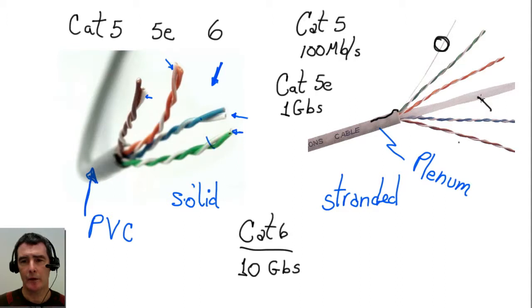Category 6 has another element inside. It's a spacer. And if I looked at this at the end view, this spacer is designed to keep the conductors separate. So your conductors would be spaced apart a little more. And that allows the signal to travel faster as well. And this is one of the reasons that CAT 6 gets its 10 gigabit per second bandwidth.